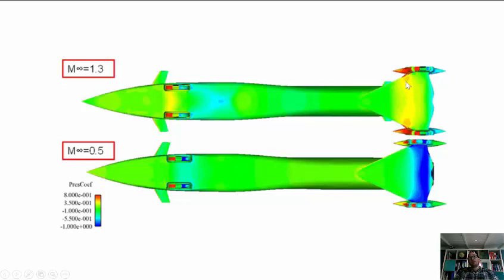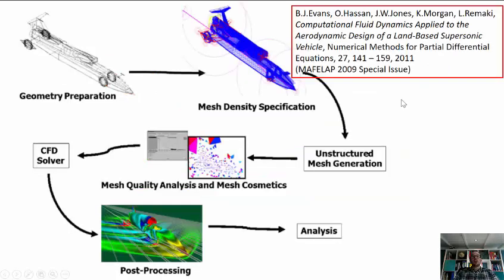I should mention that all of this was analyzed using the FLITE 3D CFD code developed within Swansea University, the College of Engineering, and the specifics about that solver and how it was applied in the context of the Bloodhound project were detailed in a previous publication in Numerical Methods for Partial Differential Equations back in 2011.